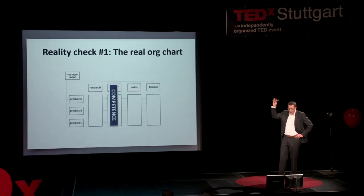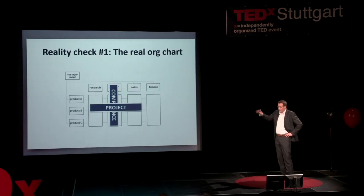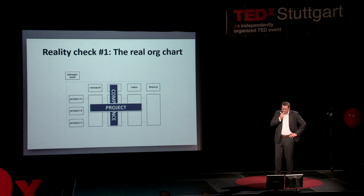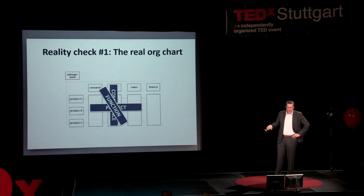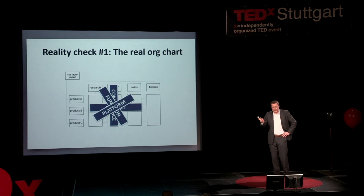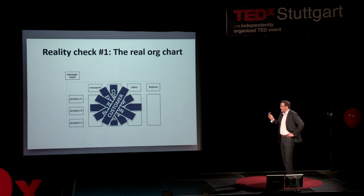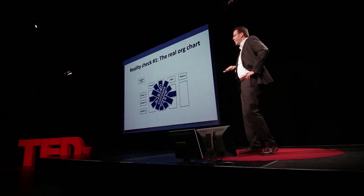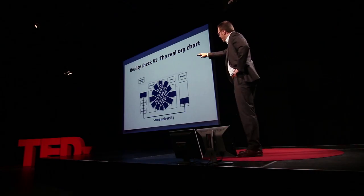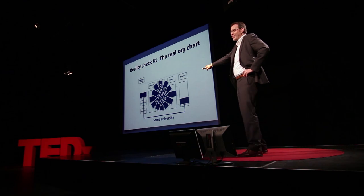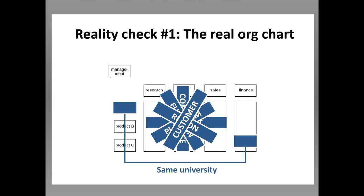Matrix organization seems simple — you have a competence line and a project view. But that's not the full story, because you also need a functional view, a platform view, you should organize by regions and customers, and then there are those two guys who went to the same university. That's real organization — it's much more complex.